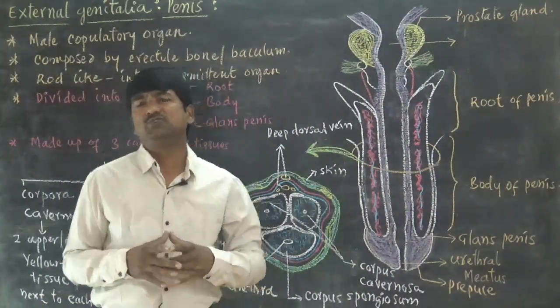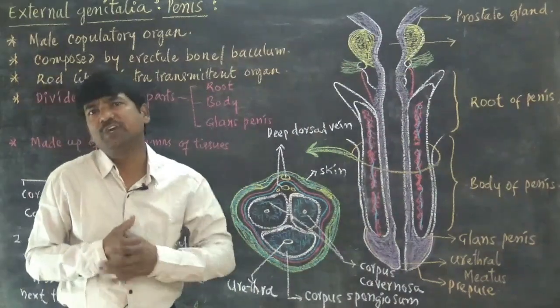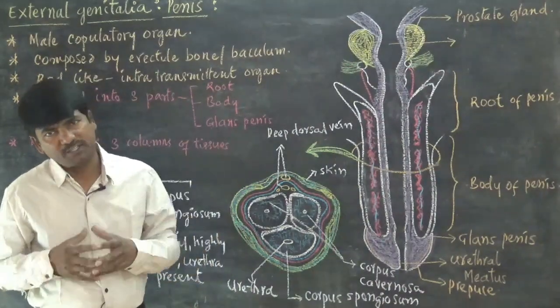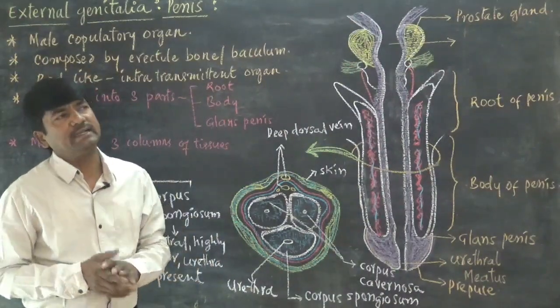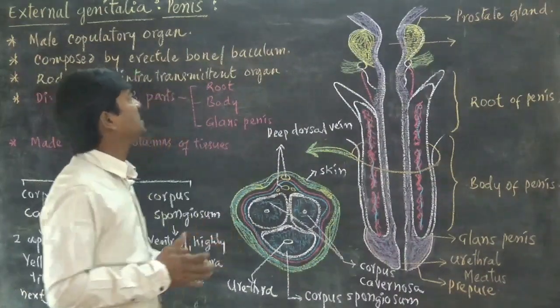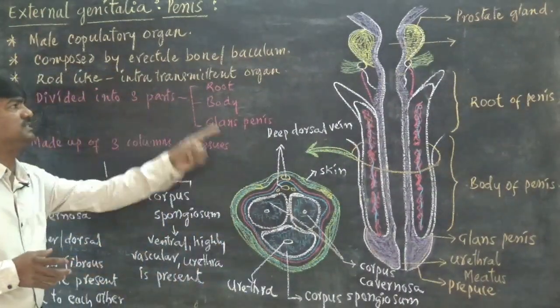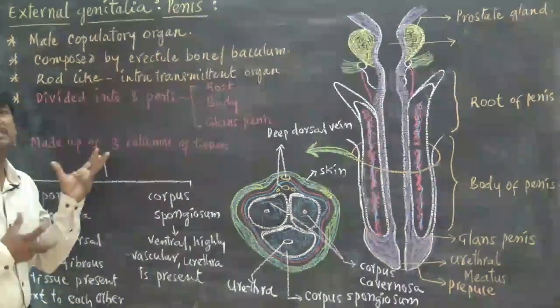During the copulation process, penis enters into the vagina. It appears like a rod-like structure during copulation and releases its sperms in the vagina. That's why it is also known as intromittent organ and appears like a rod.